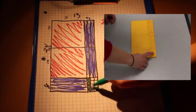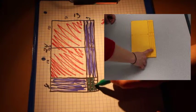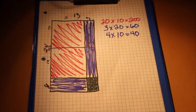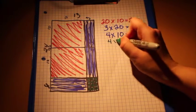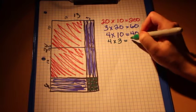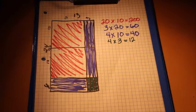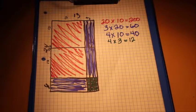1, 2, 3, 4, 5, 6, 7, 8, 9, 10, 11, 12. And 4 times 3 equals 12. Now all we have to do is add the areas.